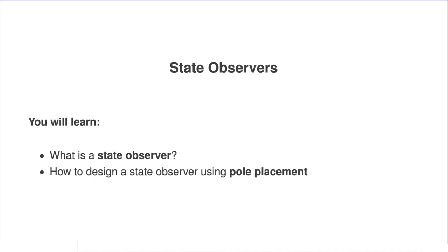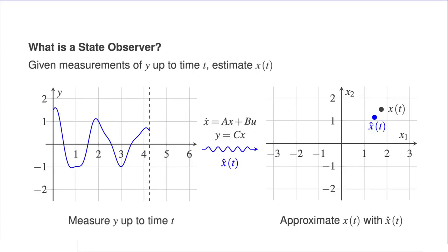We will introduce a very simple method of state observer design based on exactly the same pole placement technique that was used to design state feedback controllers in a previous lecture. Suppose we have a state space model of a system: x-dot = Ax + Bu and y = Cx. The purpose of the state observer is to come up with an estimate of the value of the state x at every point in time t, which we denote as x-hat of t.